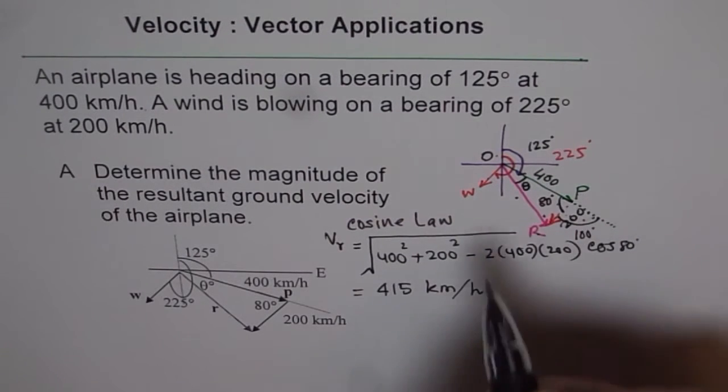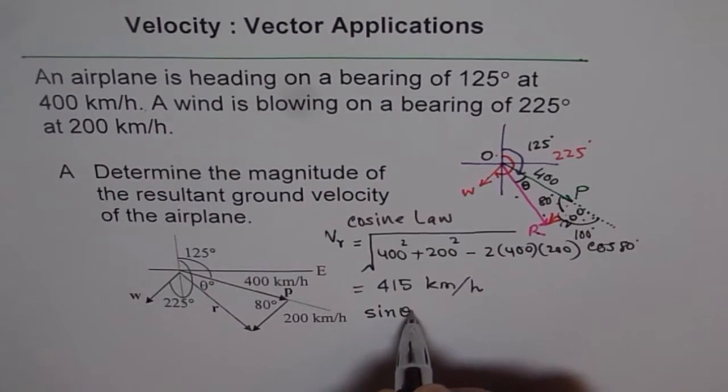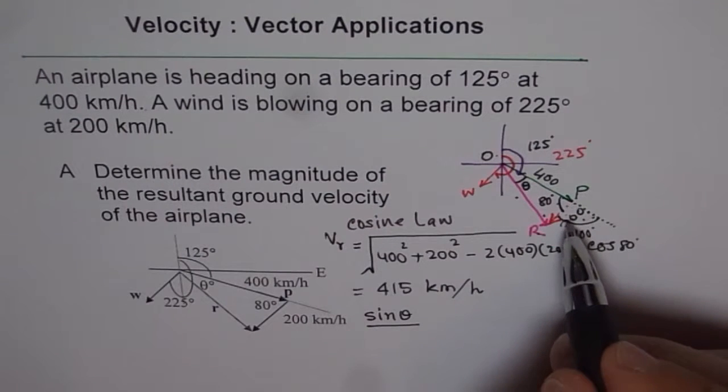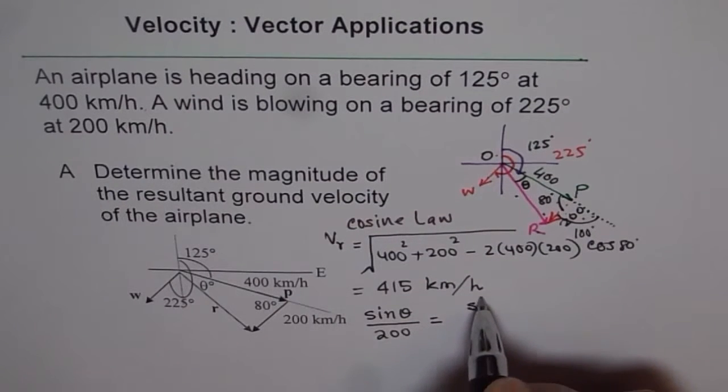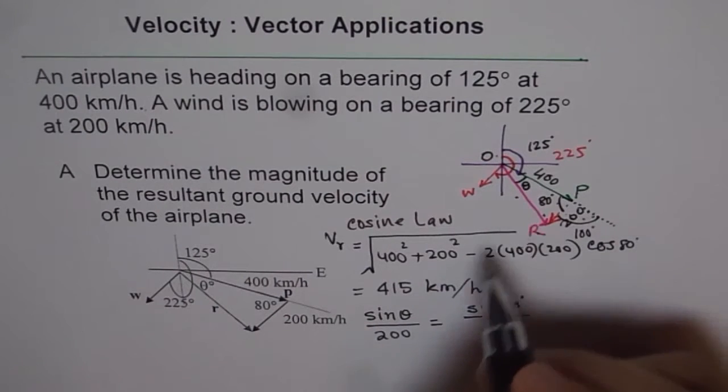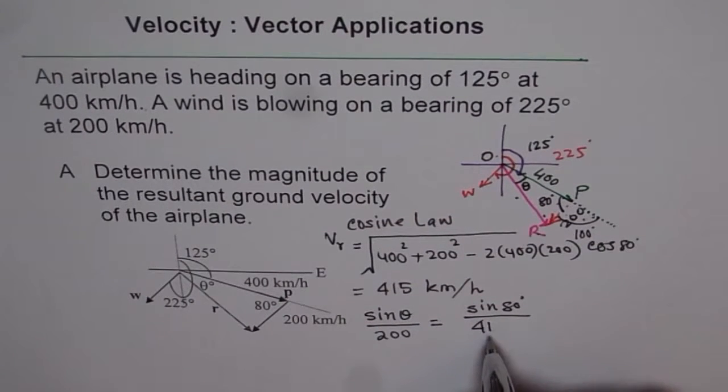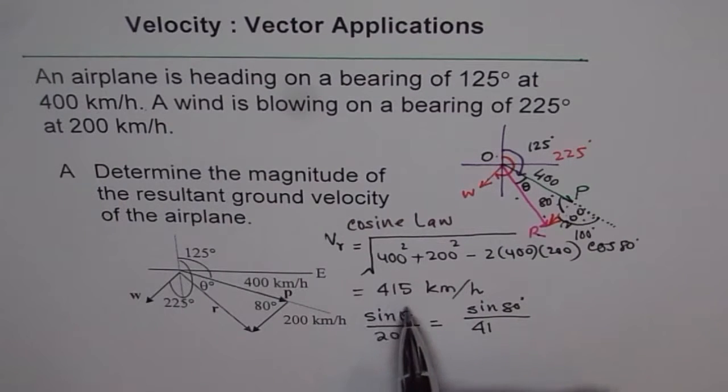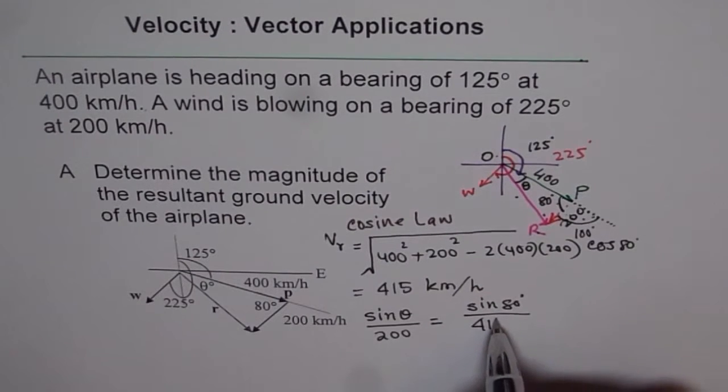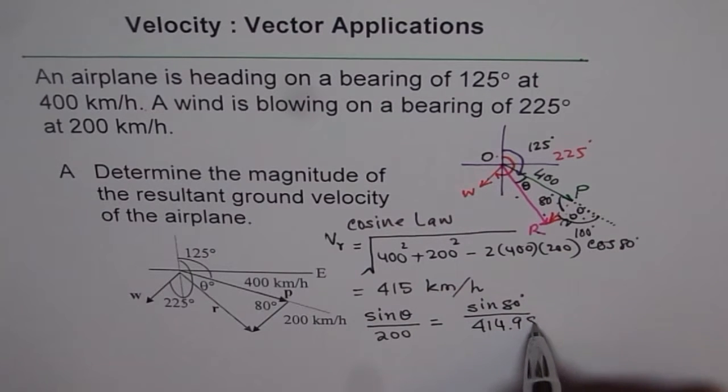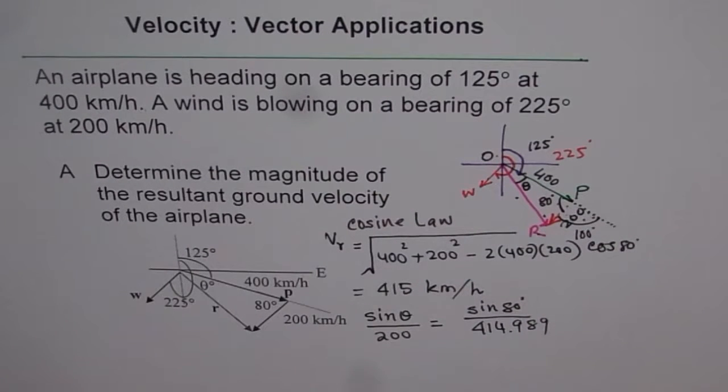Okay, now theta you can find using sine law. So you want to find theta, so you write sine on the top. So sine theta is over side opposite to it, which is 200, equals to sine of 80 degrees over resultant velocity we calculated, 415. So sometimes to get accurate answers, we can use the value which we calculated, which was 4 decimal places. In this particular case it was very close to 415, but still what I will do is I will use the same value. Because always you will not get that this was very close. So at times if it was not that close, it will give you errors. So we don't want to make those errors.